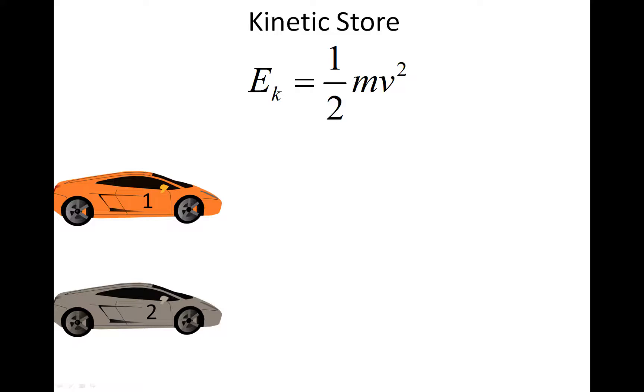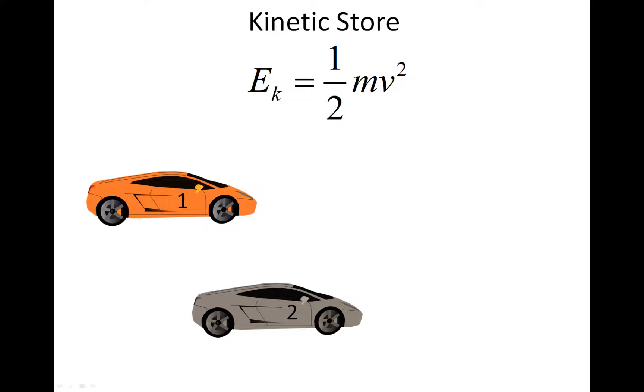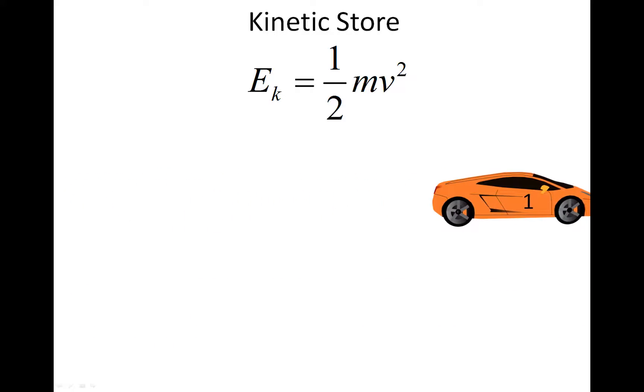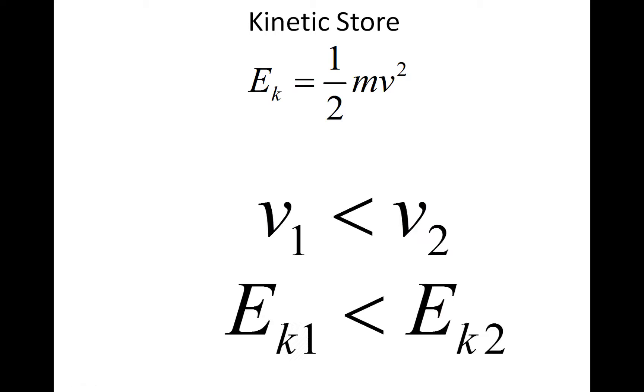have two identical cars, both with the same mass, but they're traveling at different velocities, then what we will find is that because the velocity of the first car was smaller than the velocity of the second, the energy in the kinetic store of the first car will be smaller than the energy in the kinetic store of the second car.